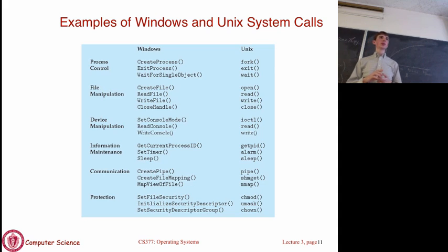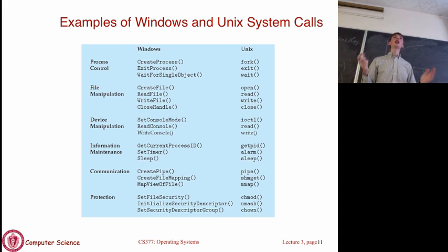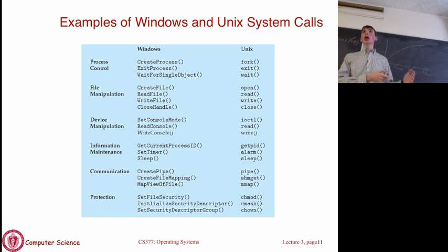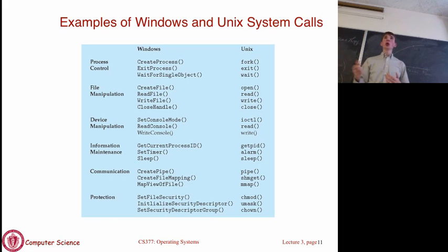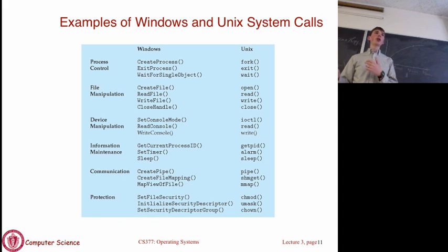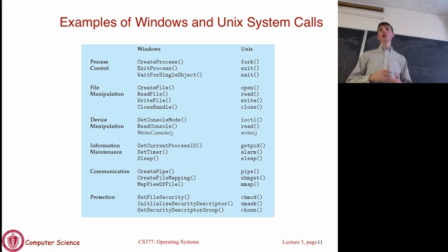Registers are directly accessible as your program runs—things like loading a memory value into a register or adding registers together. But we have multiple processes running. How can everyone access registers at will safely? When you do a context switch—when the OS switches from one process to another—it saves all the state of the first process, including the current register values, so they can be restored later. Processes can work directly with registers without worrying about overwriting other processes' values.